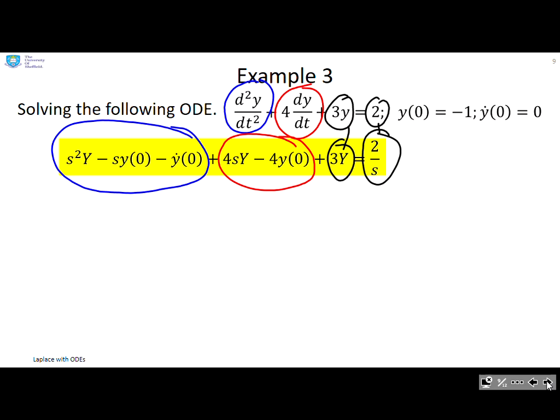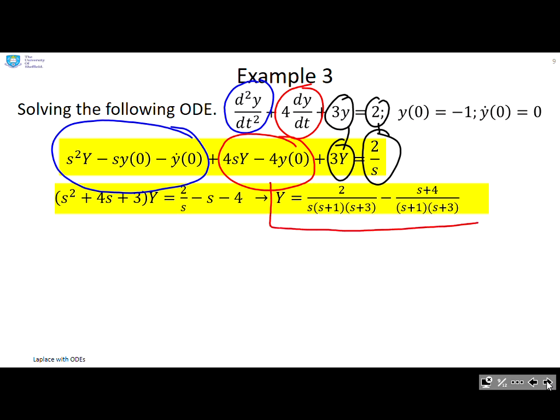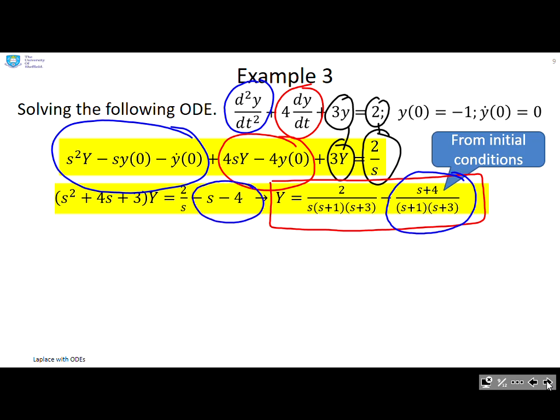Then rearrange it to extract the y. So I've done that and you can see I now end up with this term here: y = 2/(s·(s+1)(s+3)) - (s+4)/((s+1)(s+3)). Now, if it's not entirely obvious, this term on the right, (s+4)/((s+1)(s+3)), has come from the initial conditions. In the longer term, we won't bother with initial conditions, and so the answer will come out somewhat simpler.